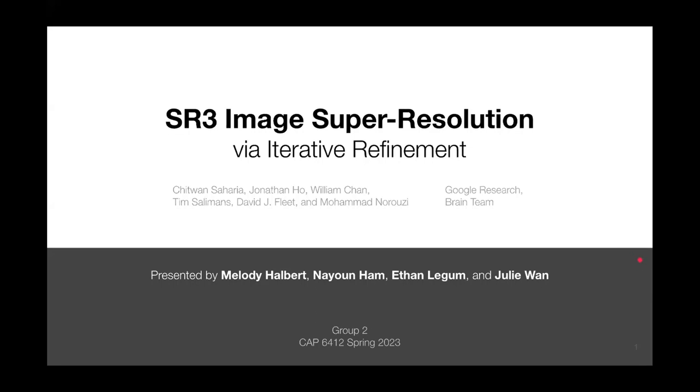Hi everybody. We're group two, consisting of Melody, Nayoon, Ethan, and Julie. And today we're going to be presenting paper 12, SR3: Image Super Resolution via Iterative Refinement.